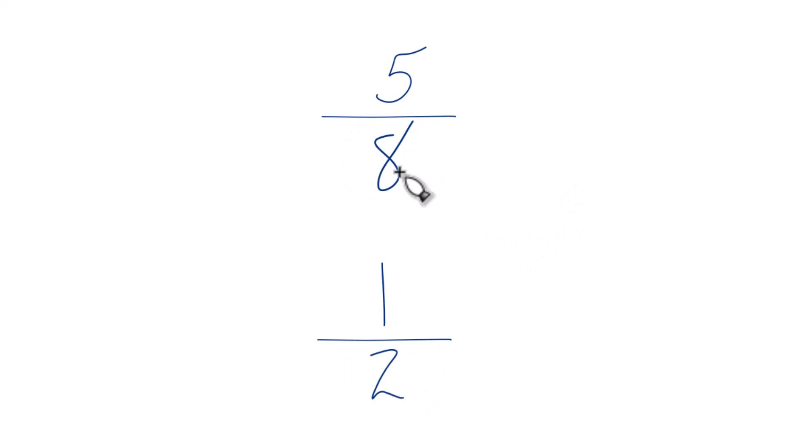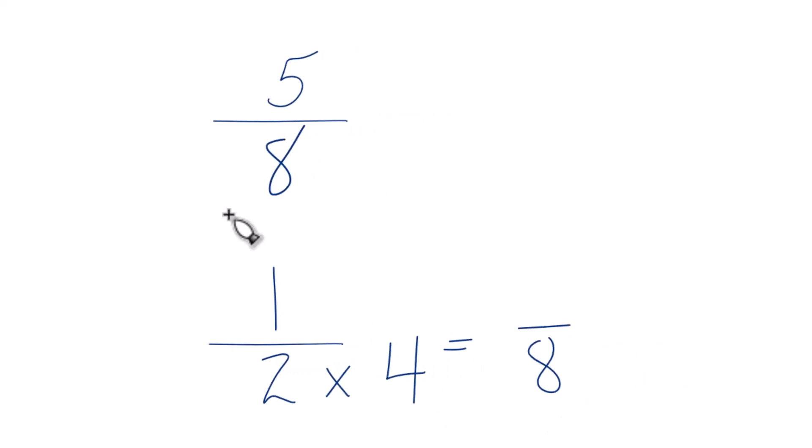So 2 goes into 8 4 times. So I'm going to multiply 2 times 4, because that'll give me 8, like this. I already have 8 up here in the denominator, so I'm just going to keep this as 5 eighths.